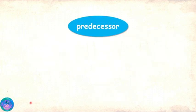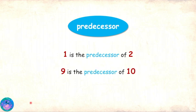Predecessor. Okay, so 1 comes before 2, so 1 is the predecessor of 2? Correct. And 9 comes before 10, so 9 is the predecessor of 10. And 14 is the predecessor of 15, as 14 comes before 15. Right again.